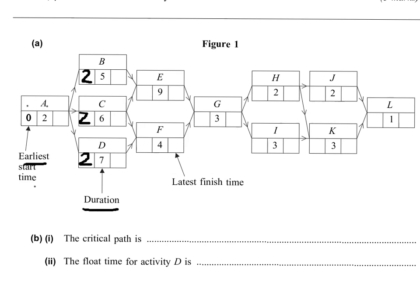So B's task takes 5 days. 2 plus 5, so the earliest is 7. C's task takes 6 days, so 2 plus 6 is 8. So E will have to wait until C is finished, so I would have to write 8.